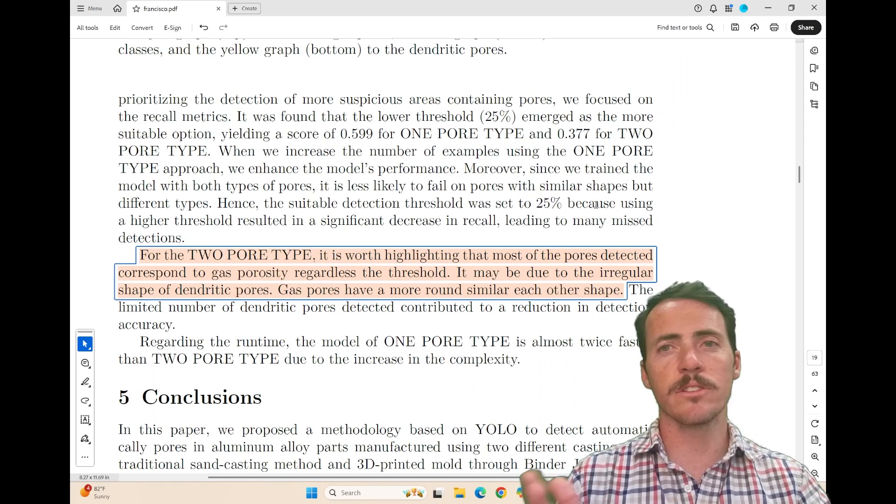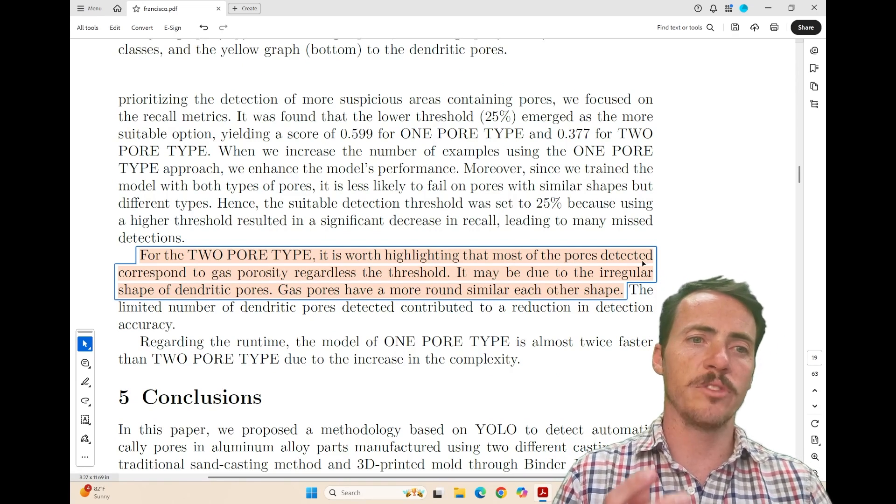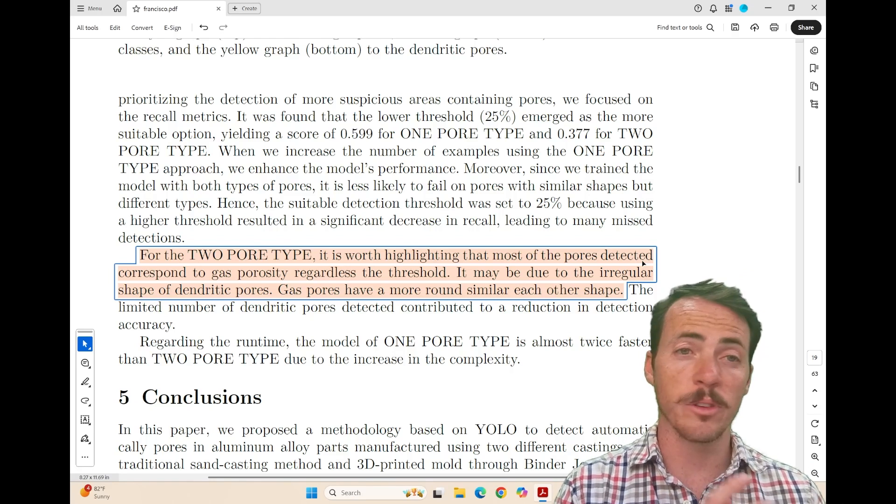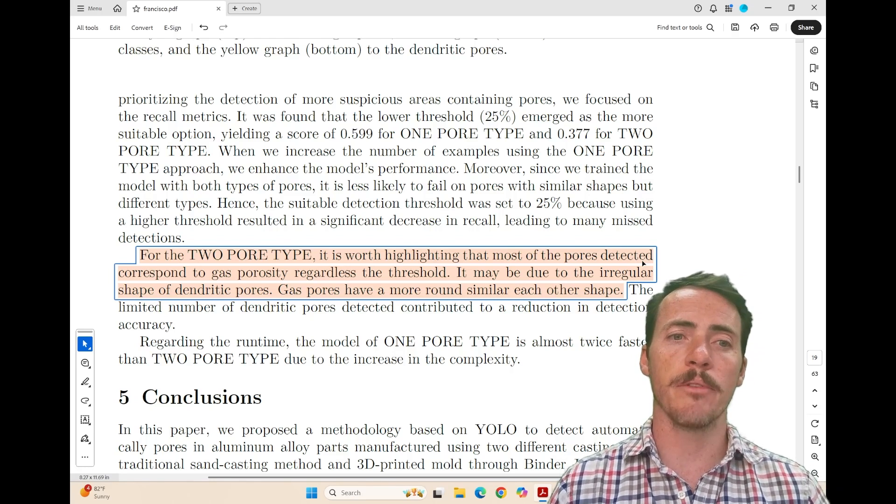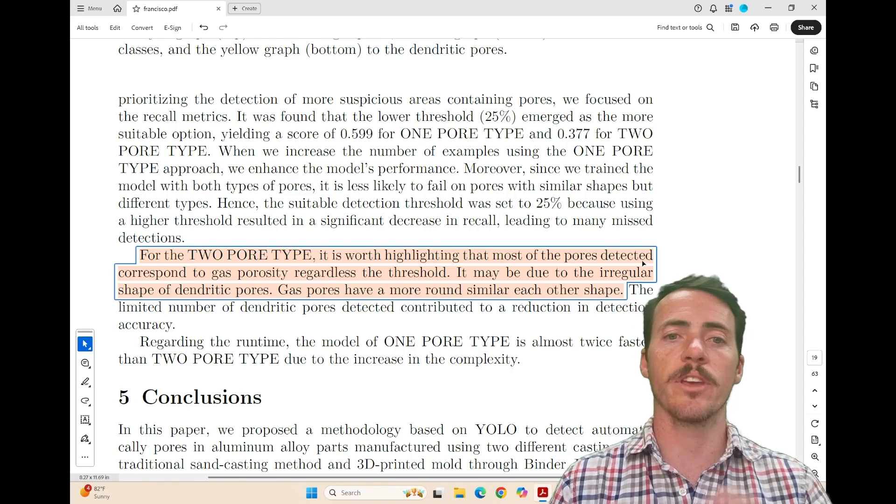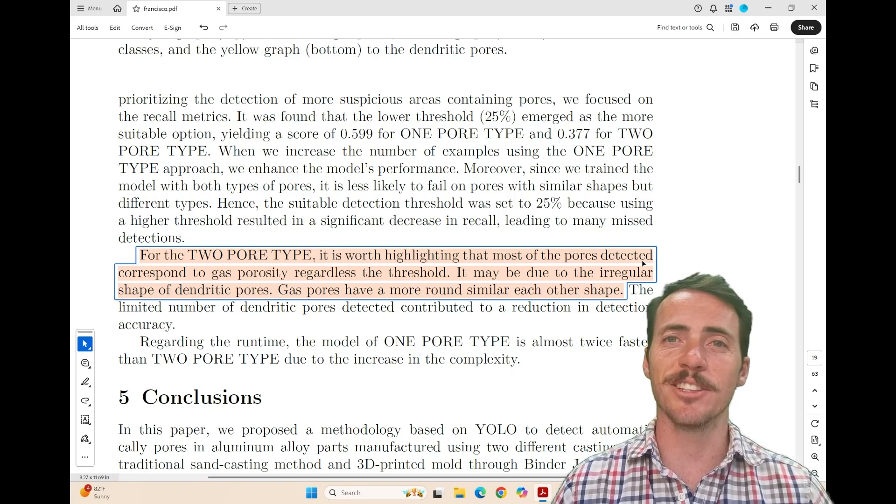There were some differences clearly between the two different types of pores. They point out that it's worth highlighting here that the most pores detected corresponded to the gas pores. There's just more of them. And it also might be due to the irregular shape of the dendritic pores, whereas the gas pores tend to be more round. So take a look at this paper in the latest issue of IMMI.